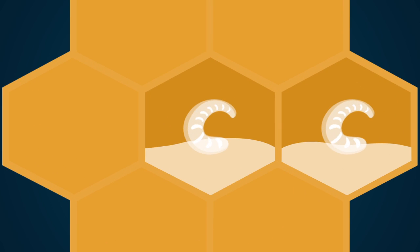Before the adult nurse bee caps the brood cell, a Varroa mite enters it and settles in the larval food at the bottom of the cell.